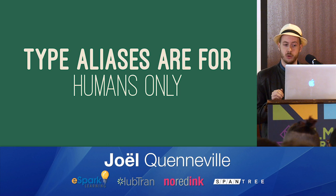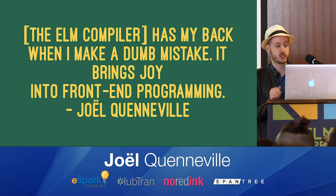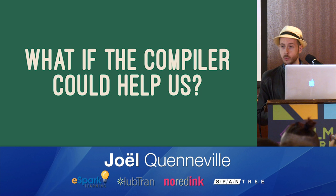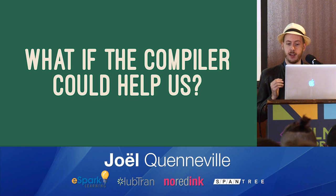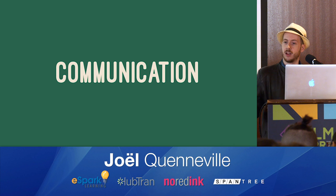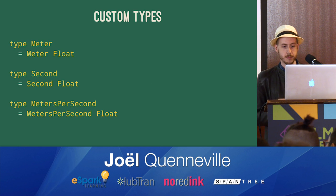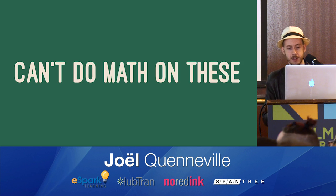And humans aren't the only part of the equation when writing code. Last year during an interview, I was asked to describe the experience of writing Elm. I said something like this: the Elm compiler has my back when I make a dumb mistake. It brings joy into front-end programming. So what if the compiler could help us to prevent us from making some of these mistakes? Well, just like when we want humans to help us, it's important to have some good communication. With the Elm compiler, we communicate via types. So we might create some custom types here and say we have meters, seconds, and meters per second. And these just wrap floats, but they're their own standalone types. It's important to remember that we can't do math directly on these because they're not numbers. That's kind of the whole point of what we're doing here.